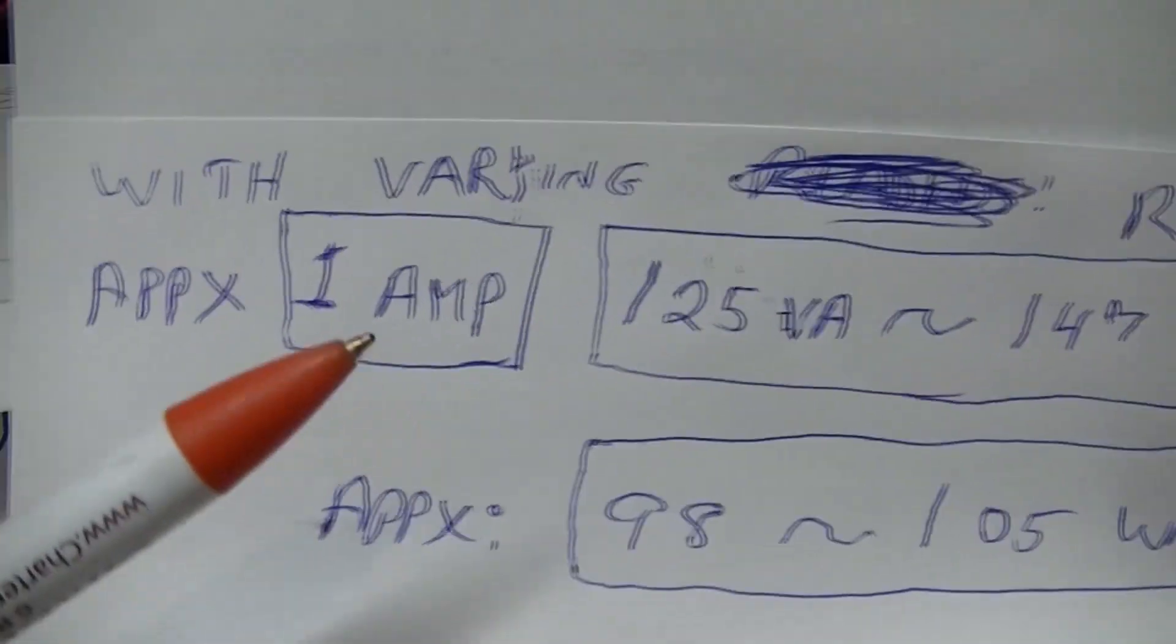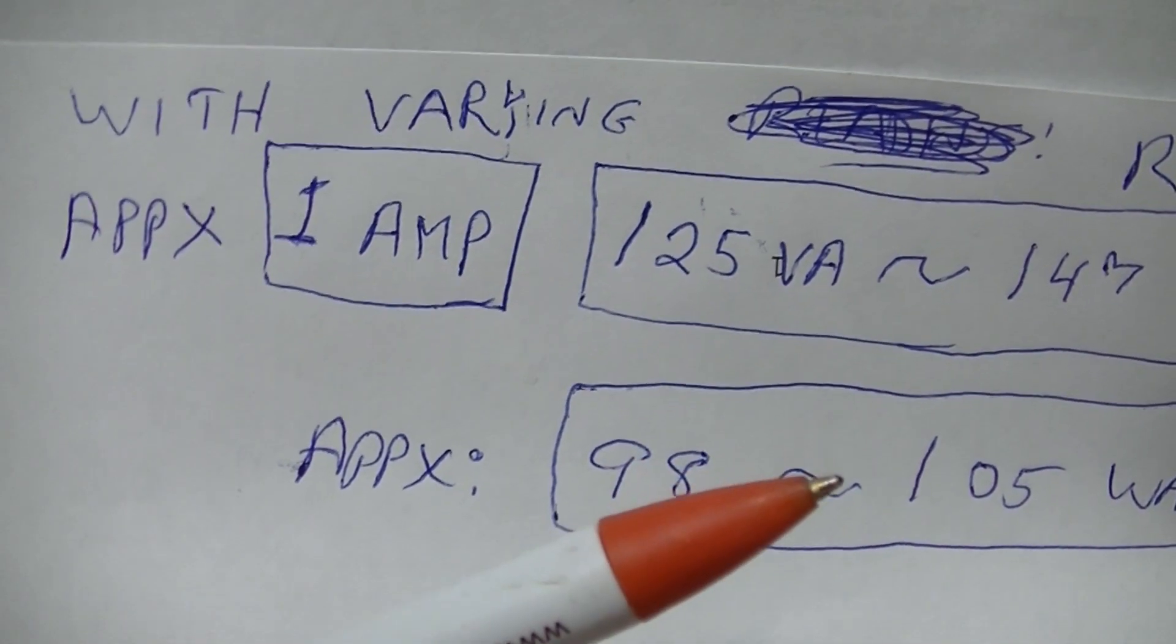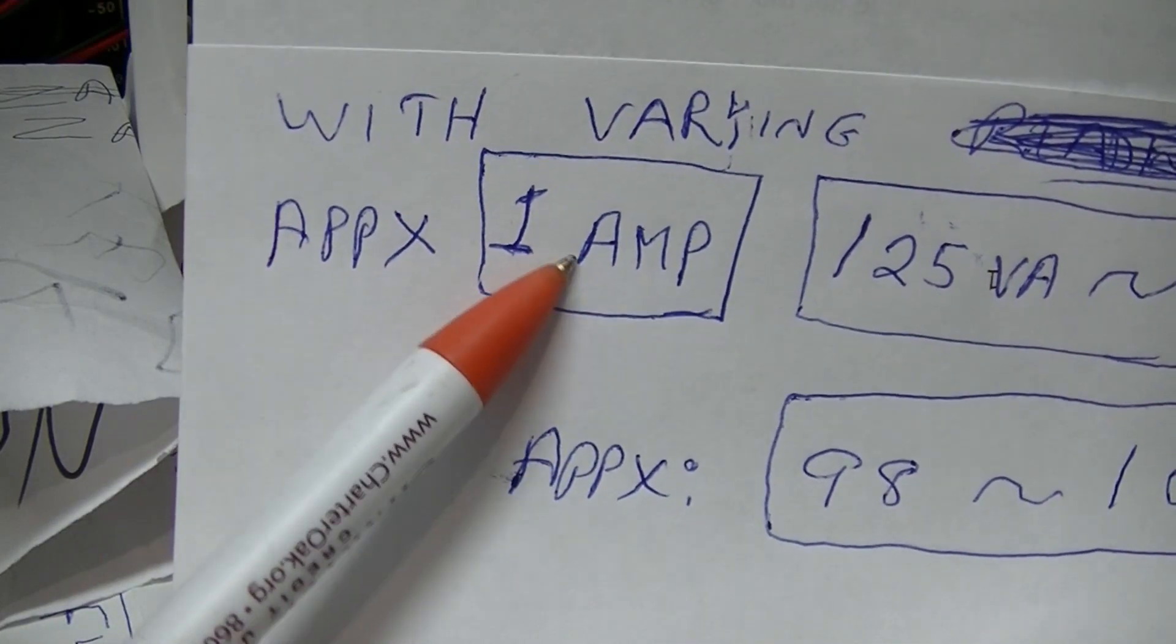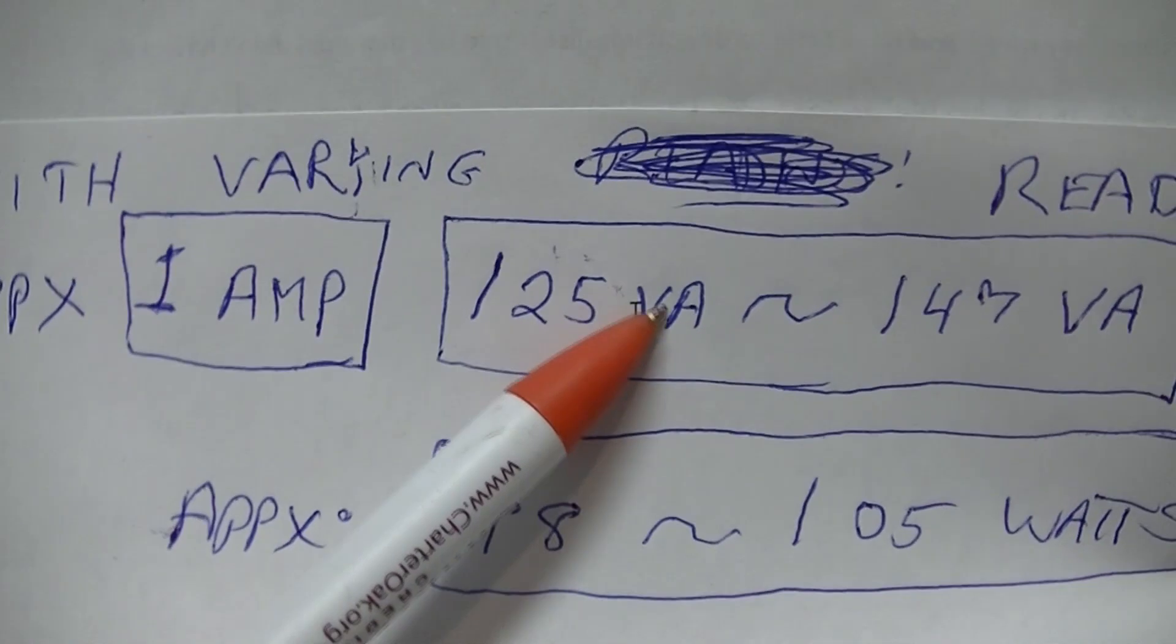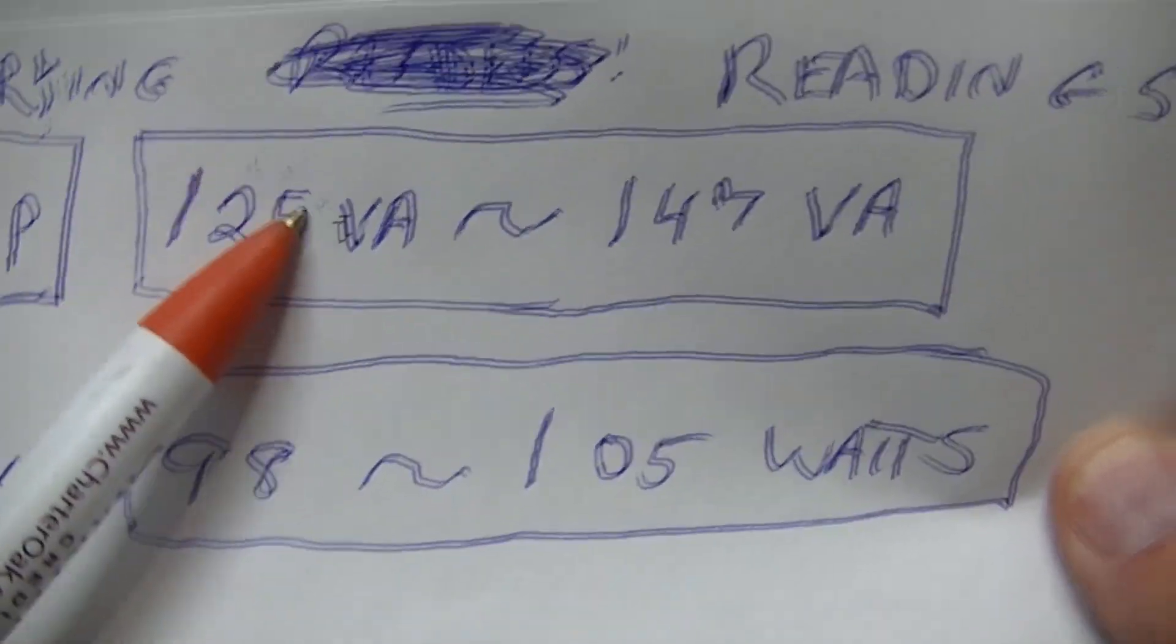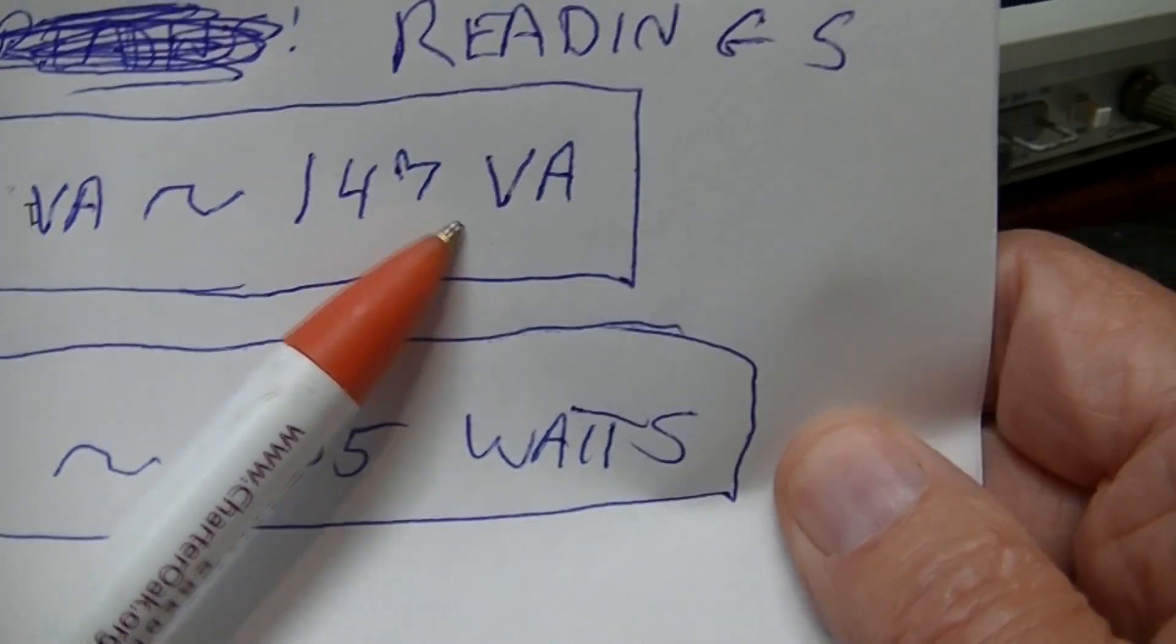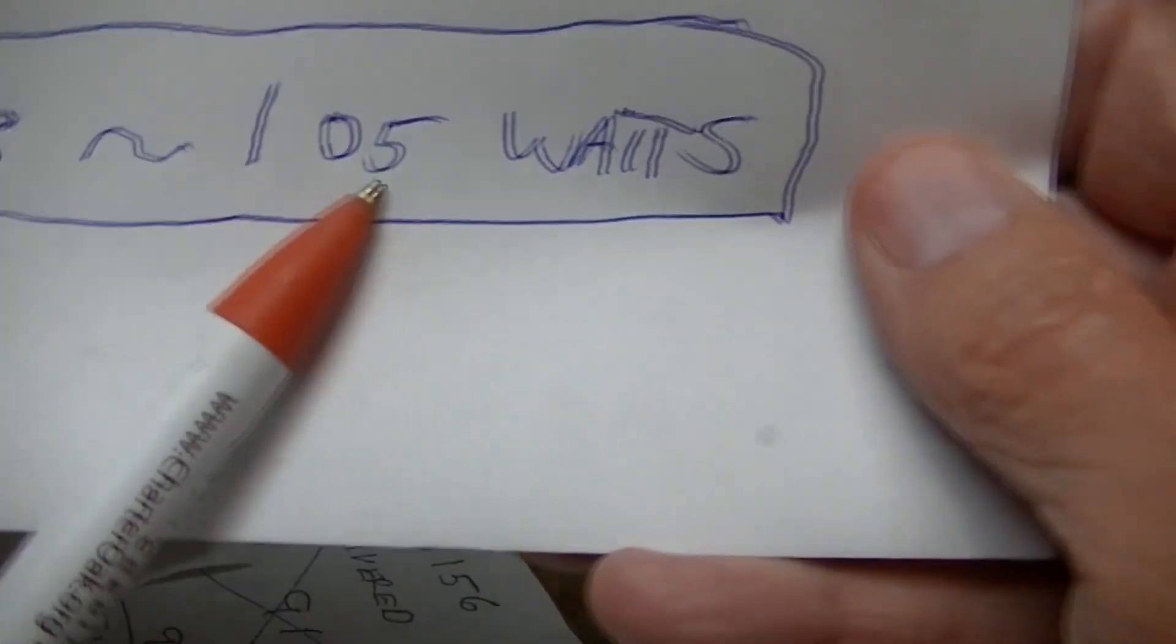So I let the computer come up. It took about three to five minutes for everything to come up fully, the desktop to show. I was watching these readings and I was getting a variation a little below maybe 1.1 amps and 0.97 amps. I was getting a variation on the volt amperes from 125 or thereabouts to as much as 147 volt amperes. This is for both the computer and his 26 inch flat screen monitor.